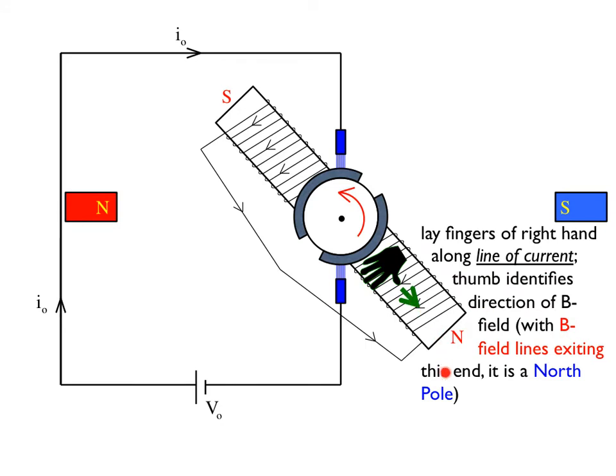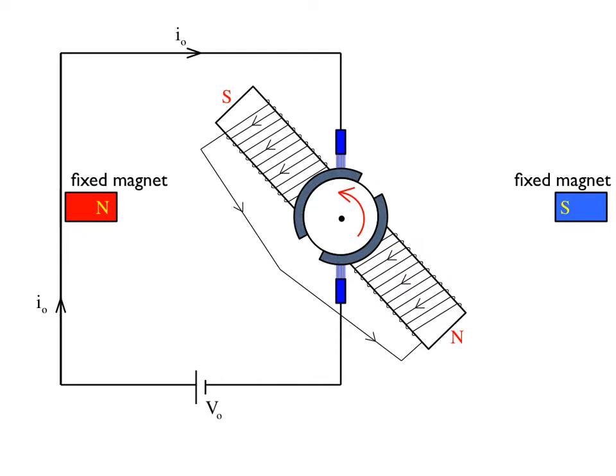So in this case, the field lines are leaving this end, which means this end would be a north pole. So the hallmark of all motors is that you have a fixed magnetic field and an alternating magnetic field. Here, the fixed magnetic field is being generated by a couple of fixed magnets. The alternating magnetic field is going to end up being generated by this coil.